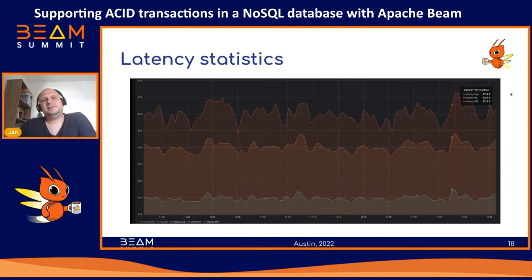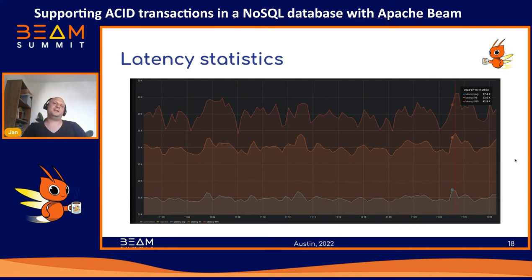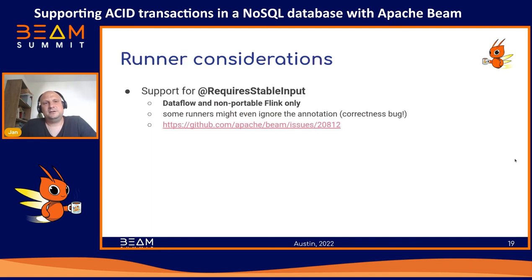The number of rejected transactions mostly depends on how much contention there is between clients accessing the database. If the key space is huge, there is low contention and the number of rejected transactions will be low. On the other hand, if there is high contention, the number of rejected transactions will be high due to a higher probability of fetching stale data. For a proof of concept, 700 committed transactions per second looks quite usable. However, the latency is really high, due to how Flink works with checkpoint barriers and the @RequiresStableInput annotation.